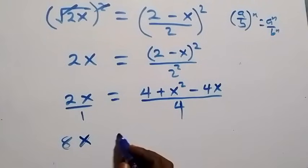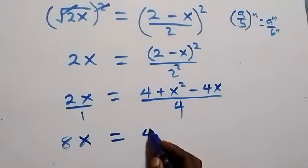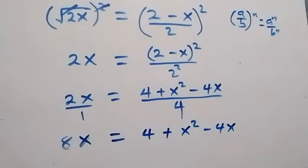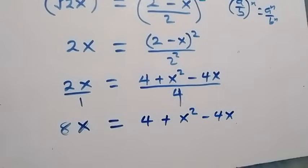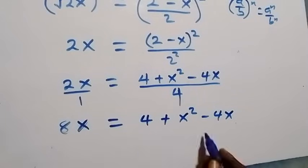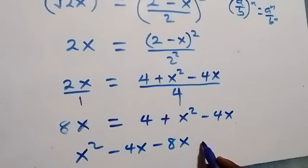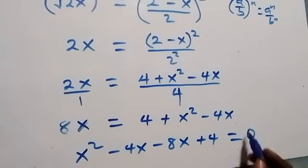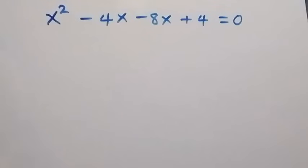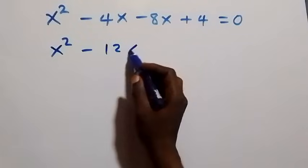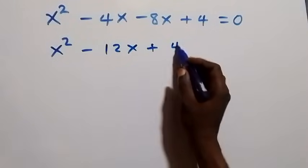So we have 8x equals 4 plus x squared minus 4x. We rearrange and bring everything to one side: x squared minus 4x minus 8x plus 4 equals zero, which gives us x squared minus 12x plus 4 equals to zero.